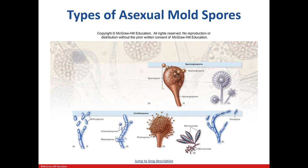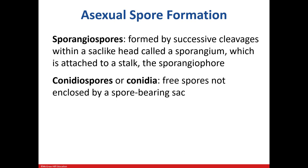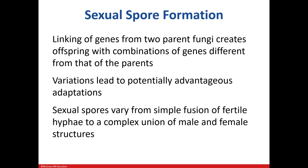There are different types of asexual spores. Sporangiospores have a protective covering, which can rupture to release the spores. Conidiospores are naked and can also be dispersed. Fungal cells can also undergo sexual spore formation, which leads to genetic variation and can benefit survival.